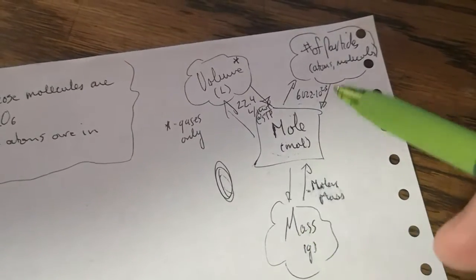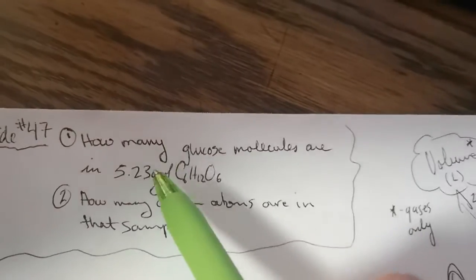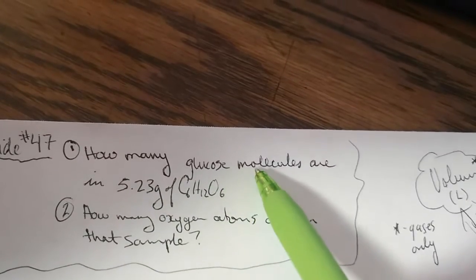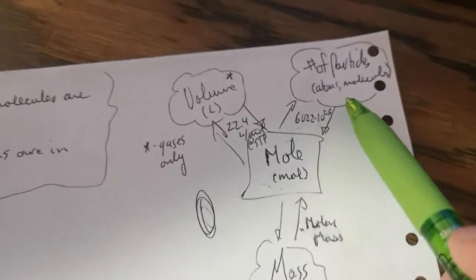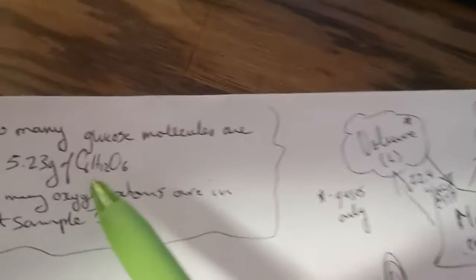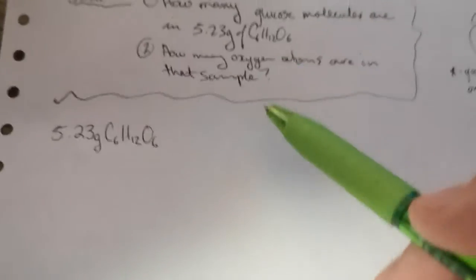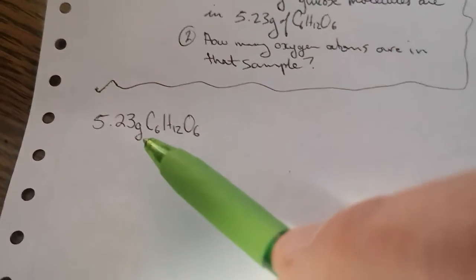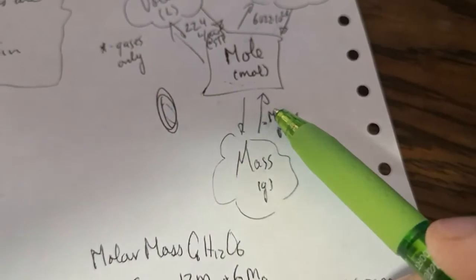So if we're going to go from mass to number of particles, molecules is an example of a type of particle. We're going to have to do it in two steps. So our first step is to convert mass into moles using the molar mass.